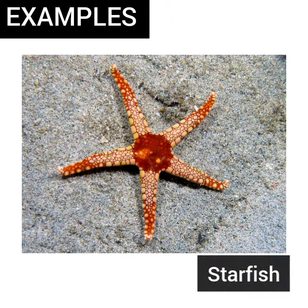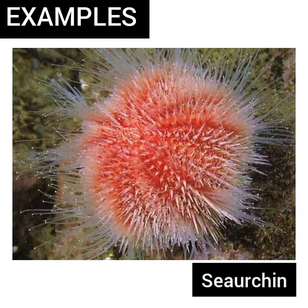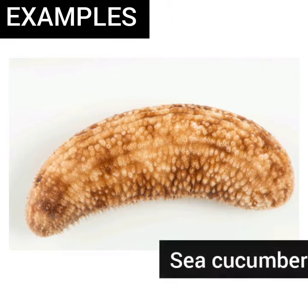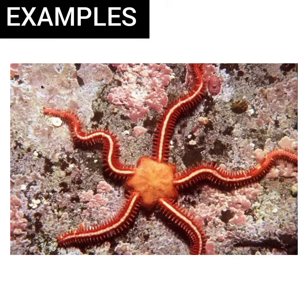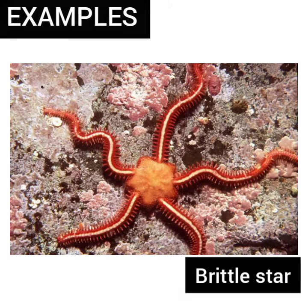The common examples of phylum Echinodermata are starfish, sea urchin, sea cucumber, sea lily, and brittle star.